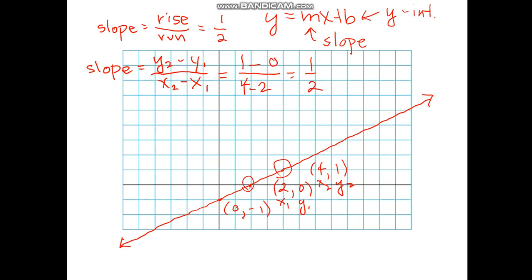My y-intercept is at 0, negative 1. I take the y value for the y-intercept. And I get the equation of the line y equals 1 half x minus 1. And that's my equation.